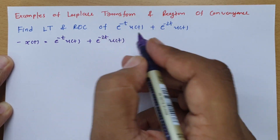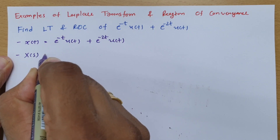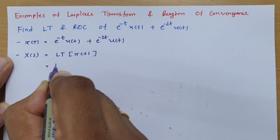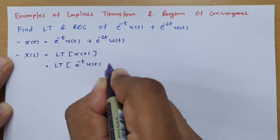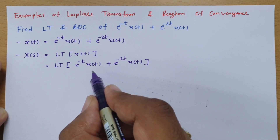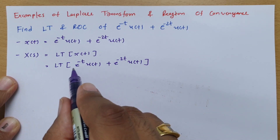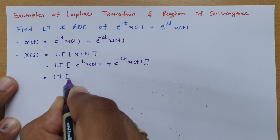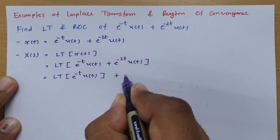We need to find the Laplace transform X(s) of x(t). Using the linearity property of the Laplace transform, we can take separate Laplace transforms for each of the two terms.